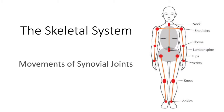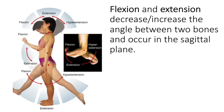Let's talk about the movements of synovial joints. In our next unit, when we talk about the muscular system, understanding these joint movements will become very important. When we talk about the action of a muscle, we are going to need to understand these movements. For example, the biceps brachii muscle, which is the muscle of your arm on the anterior of your arm, when it contracts it causes elbow flexion.